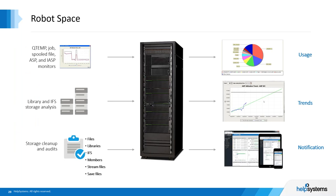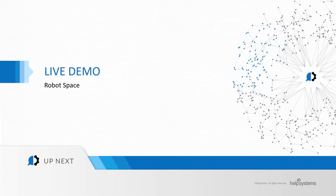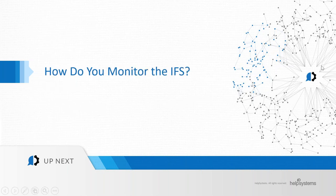A lot of people struggle with what they call the black hole of the integrated file system. We've developed technology to help you manage your storage — whether it's library storage or the IFS — and determine what's growing and keep it clean and tidy. The technology is called Robot Space. It provides real-time monitoring as well as analysis of growth in the integrated file system and gives you visibility into your IFS.